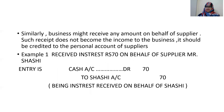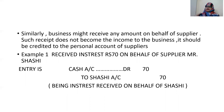Similarly, a business might receive an amount on behalf of the supplier. Such receipts do not become income to the business; it should be credited to the personal account of the supplier. If you are paying on behalf of customers you debit the customer's name; if you are receiving on behalf of suppliers you credit the supplier's name — it is just the reverse entry. If you know the payment entry, you can reverse it for the receipt.